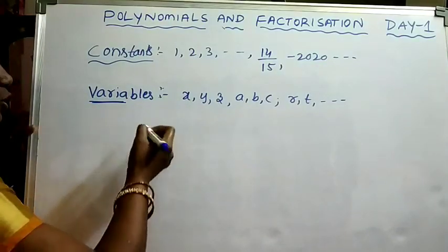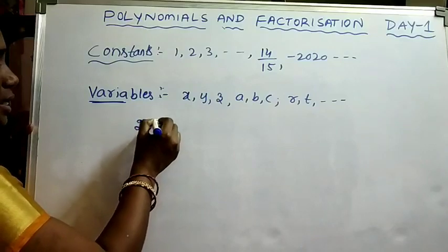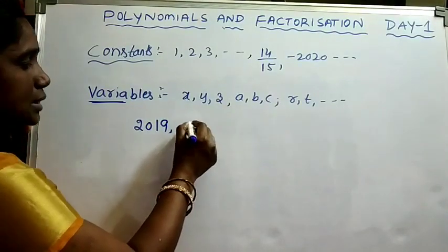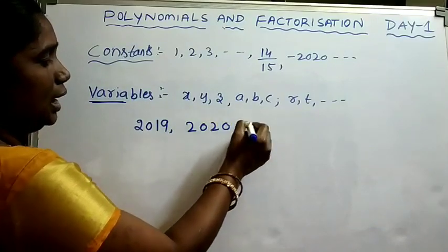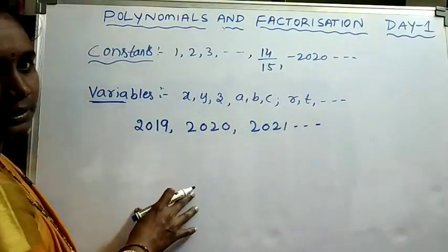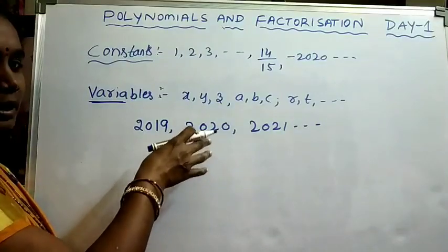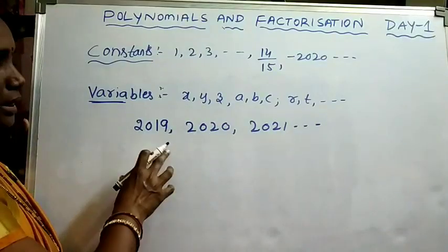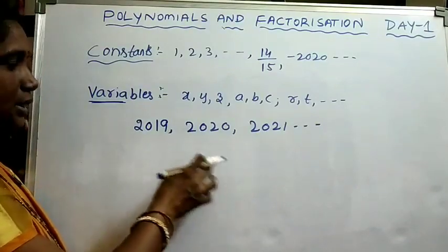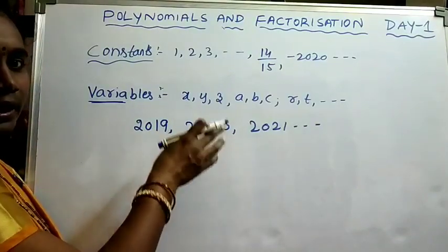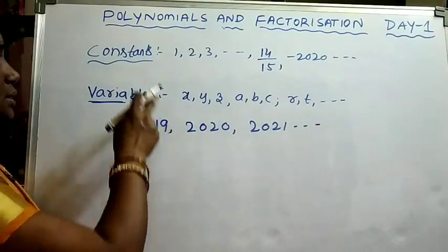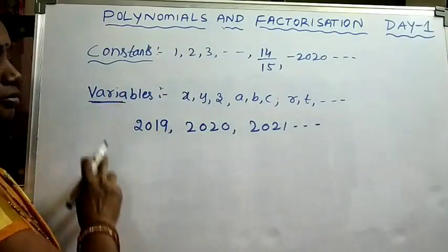Also, years are changing — last year was 2019, this year is 2020, next year is 2021. But what about the months in a year? Months January, February, March up to December are not changing. In every year they have only 12 months, January to December. Therefore, months are constants and years are variables.